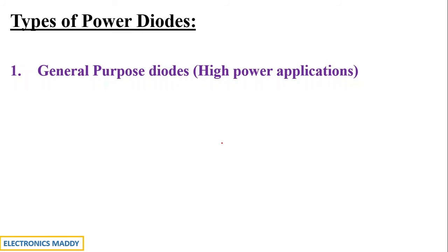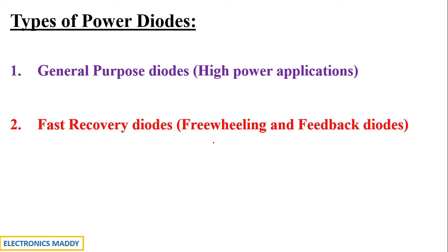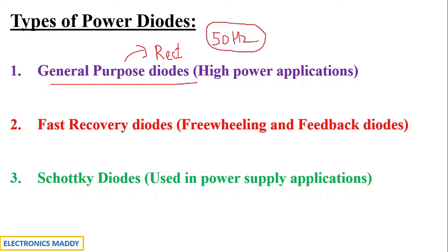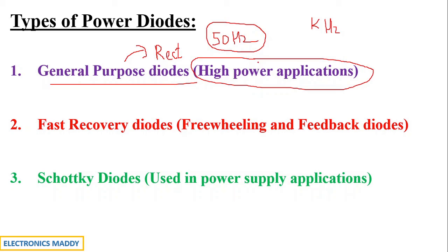Power diodes are classified into three types: general purpose diodes, fast recovery diodes, and Schottky diodes. General purpose diodes are used in rectifier circuits, which normally operate at the supply frequency of 50 Hz. Since 50 Hz is very low compared to devices operating in the kilohertz range, these diodes are suited for low frequency, high power applications.